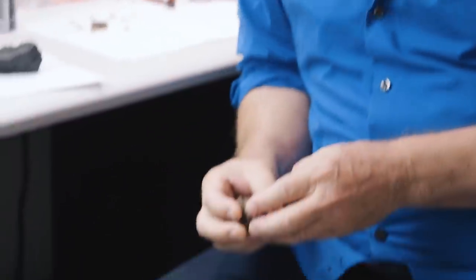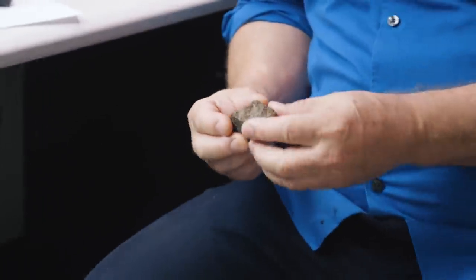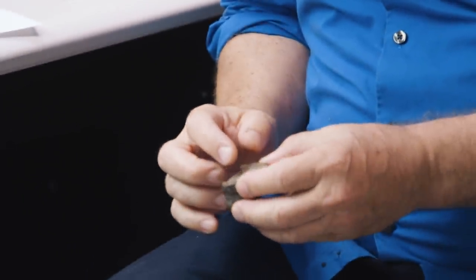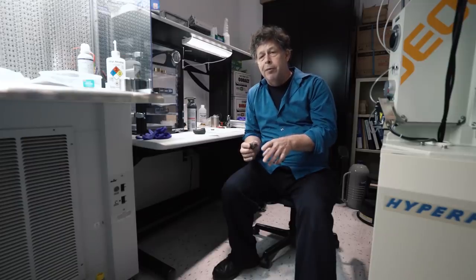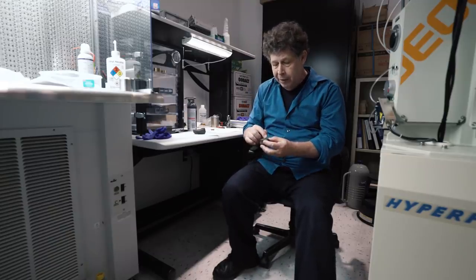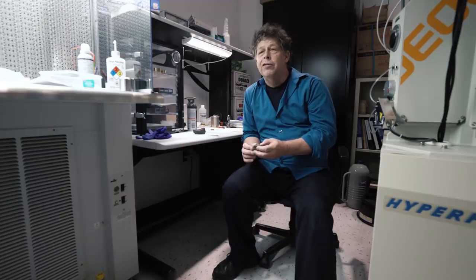Other samples hold clues that could change our understanding of the solar system. So this is a rock that is from an asteroid that formed in the inner solar system. It heated up, melted, the composition suggests it formed in the inner solar system, but it contains bits of rock from the outer solar system. And the question is, how did those get mixed together?